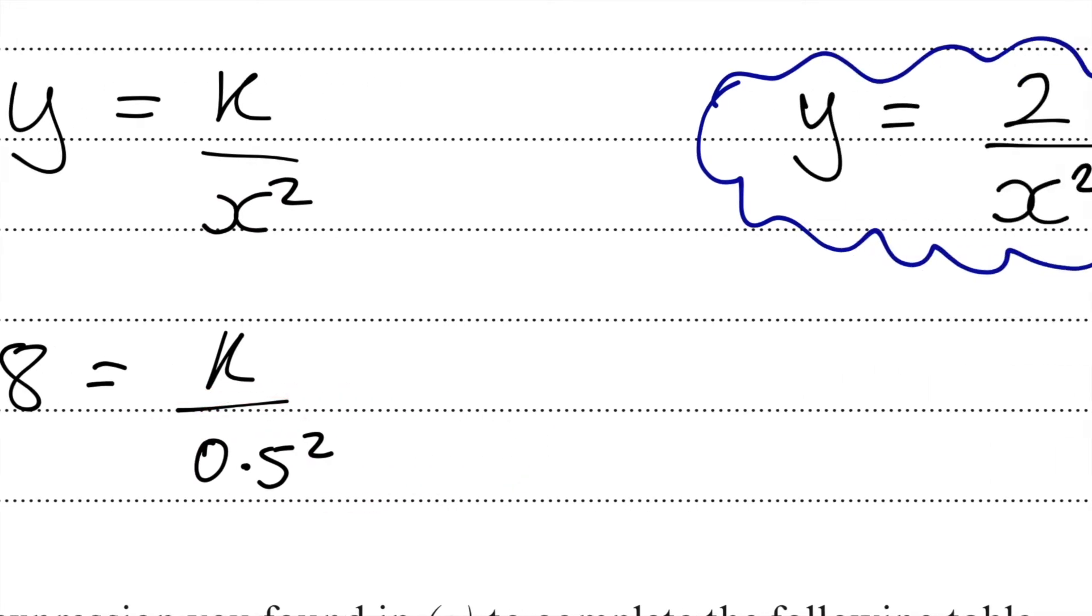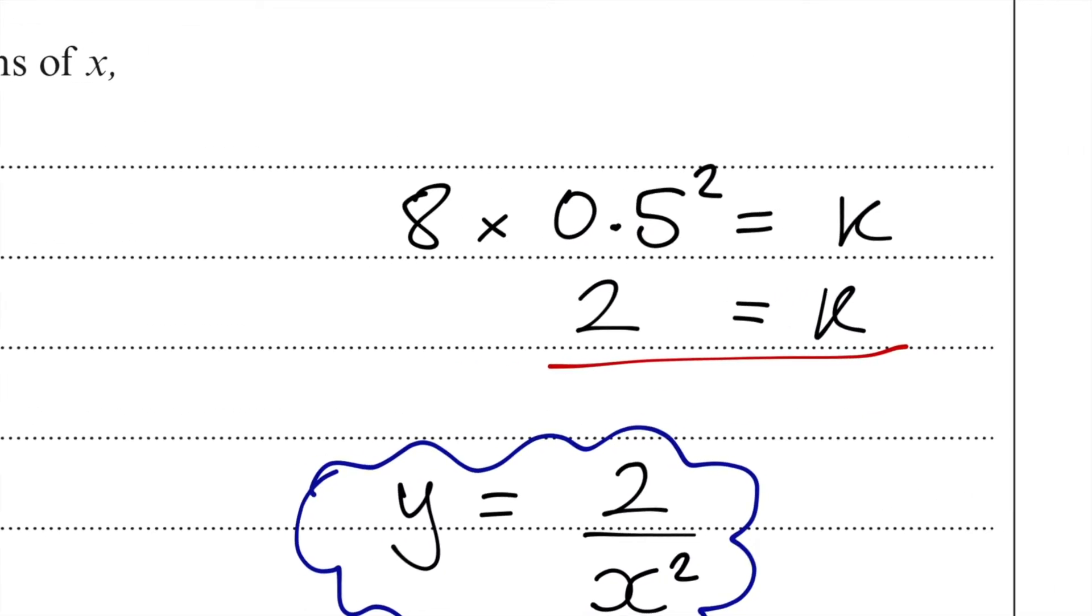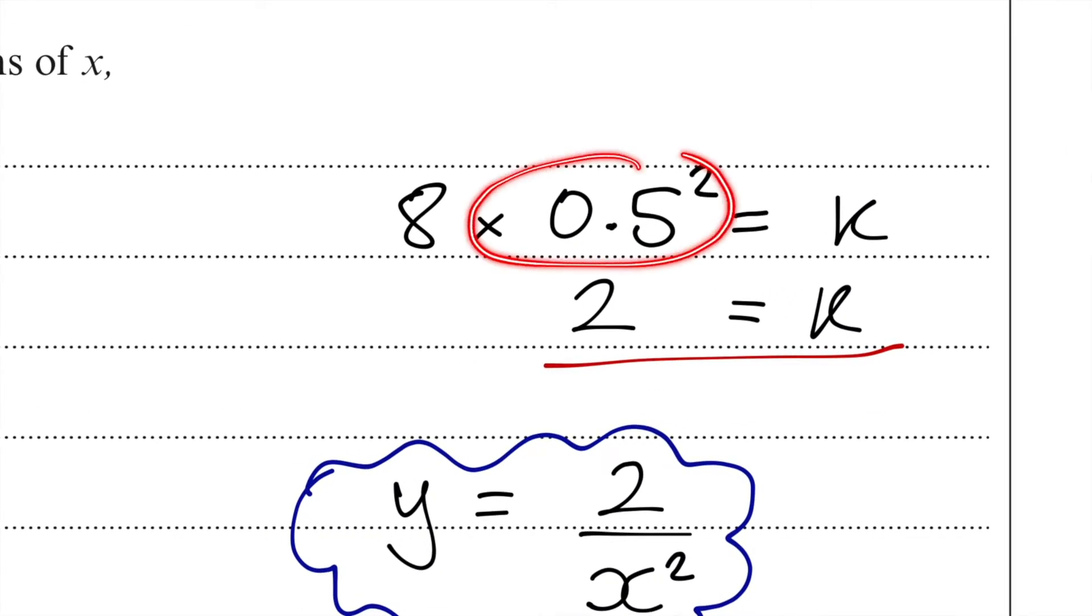Next I'm going to work out the value of k by getting rid of this divided by 0.5 squared. So as you can see here, dividing by 0.5 squared is going to change to times by 0.5 squared. Now this is a calculated question, so I can just go straight in and put that statement into my calculator to find that k is equal to 2. But 0.5 squared is 0.5 times 0.5. Again, common misconception, people think that's 2.5. It's not, it's 0.25. 0.25 is also a quarter, so 8 times by a quarter would be 2 as well.